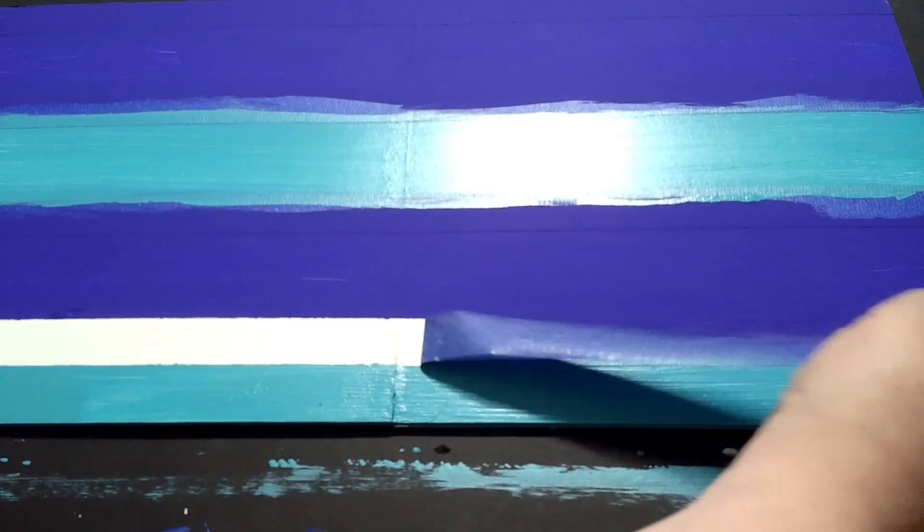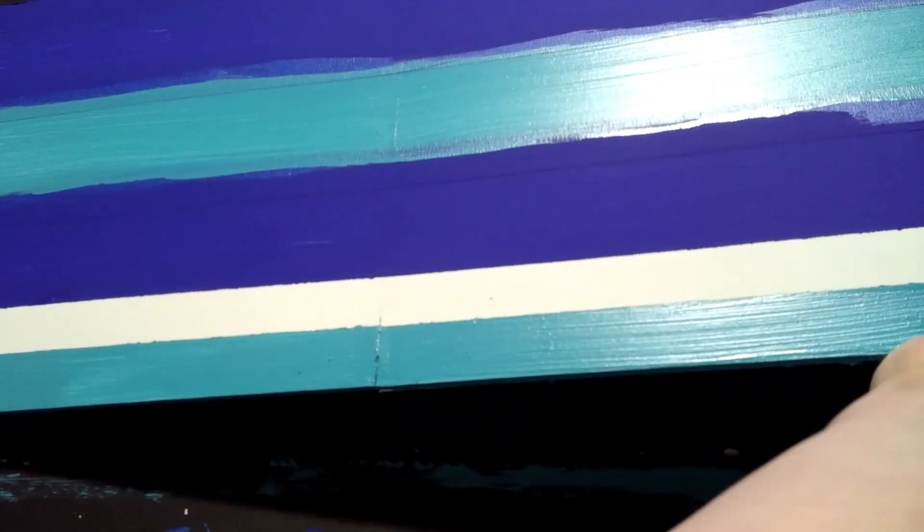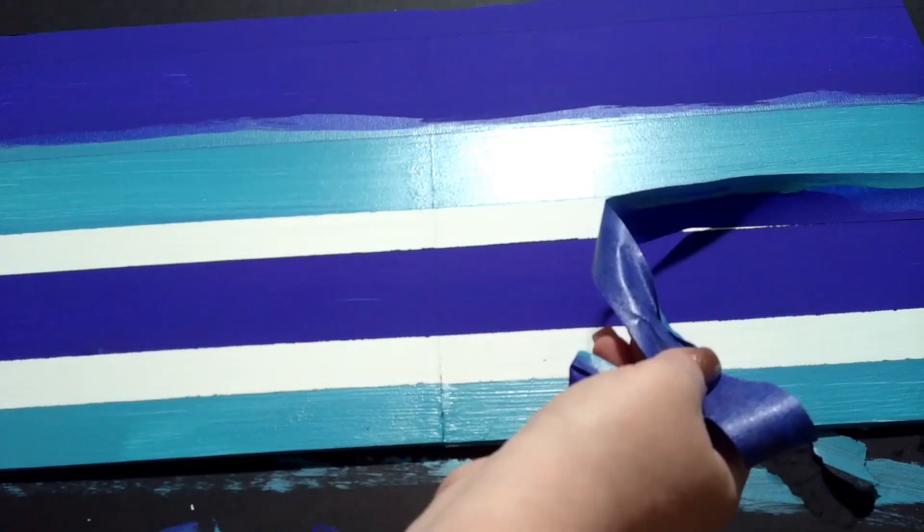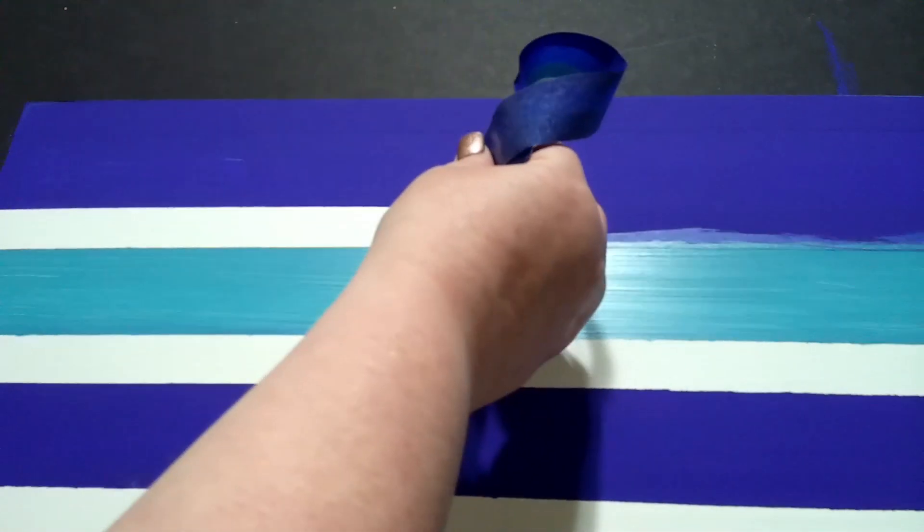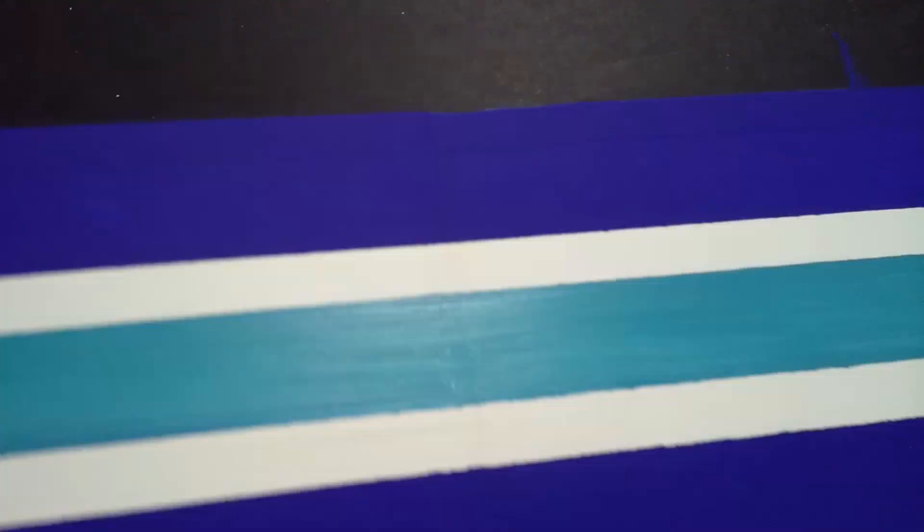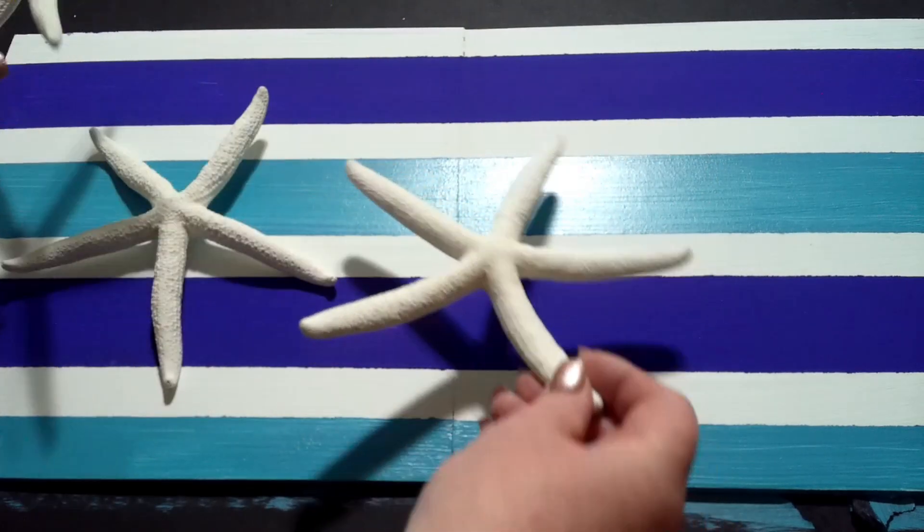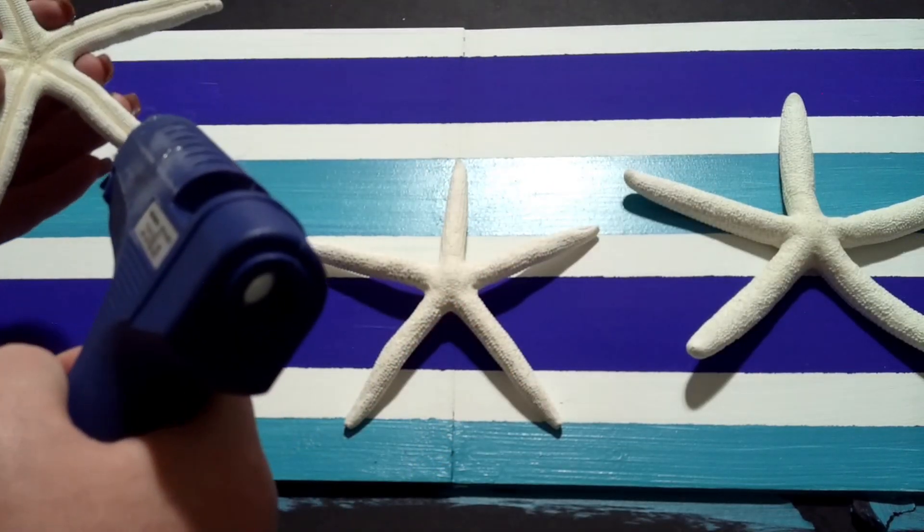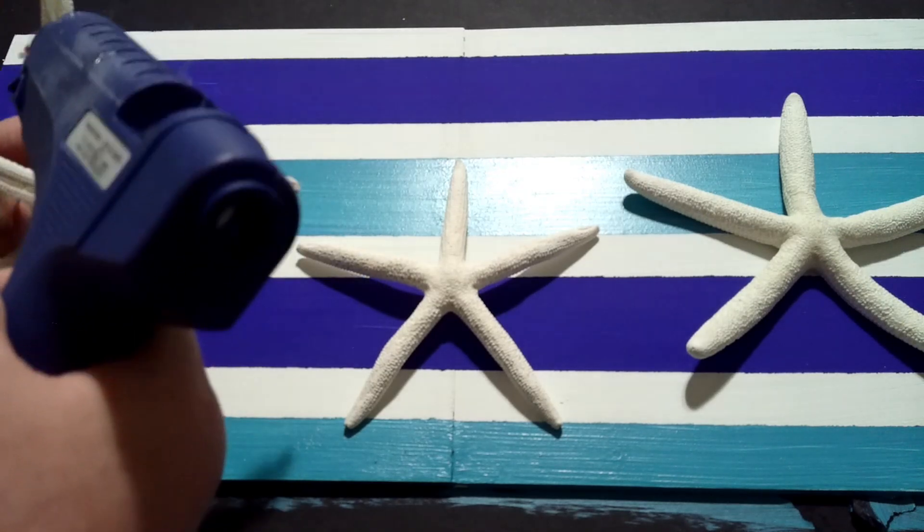The next fun part about using the painter's tape is to remove it. We're going to remove our painter's tape and it's going to show these beautiful blue, white, crisp lines. Once we have that, I got these starfishes from Walmart and I'm just going to hot glue them onto our piece in the middle towards the bottom.